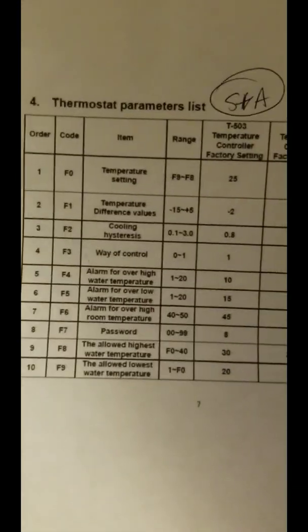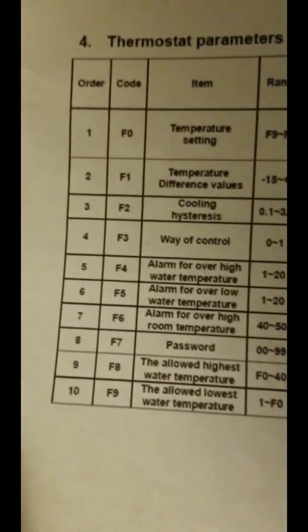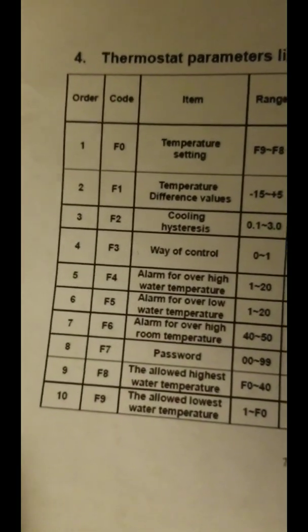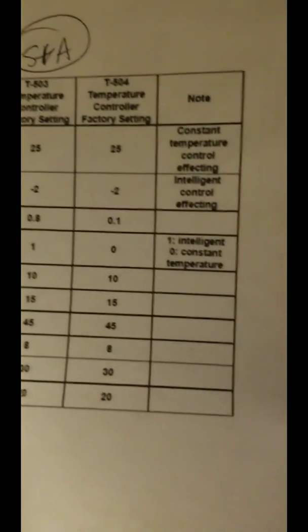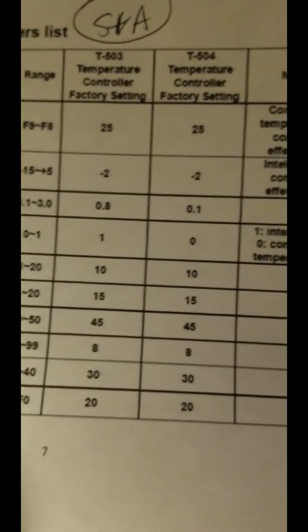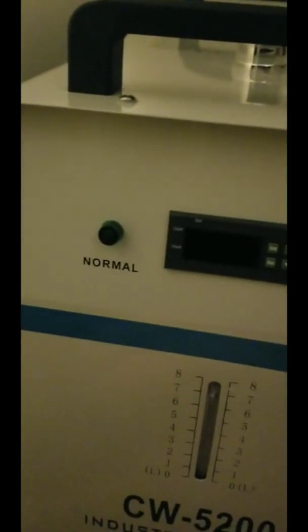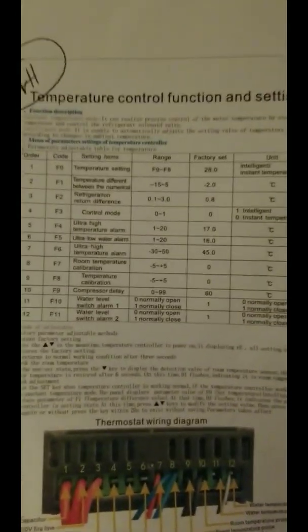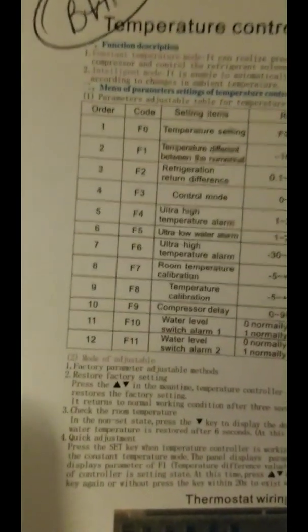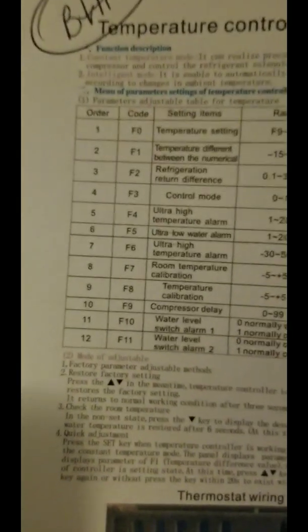Each of these brands has their own thermostat parameters list. Here's the S&A one — they have F0 through F9 with their parameters and defaults, two sets depending on the machine. Whereas the B&H machine has their own set of parameters, very similar to the S&A, but theirs goes F0 through F11, and one difference is it does not have a password.